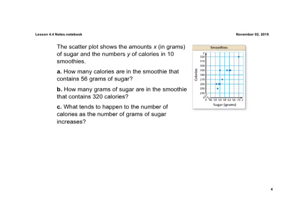This first one says, the scatter plot shows the amount x in grams of sugar. So the x-axis shows sugar, the y-axis shows calories in 10 smoothies. Part A says, how many calories are in a smoothie that contains 56 grams of sugar?